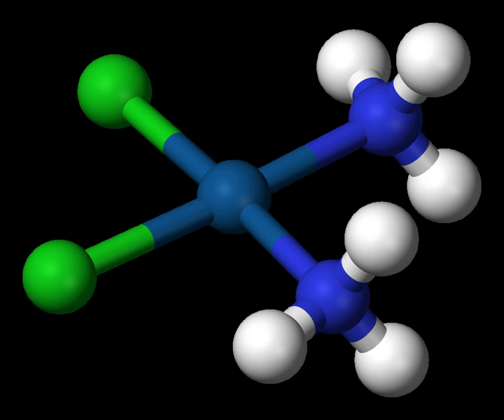In chemistry, a coordination complex consists of a central atom or ion, which is usually metallic and is called the coordination center, and a surrounding array of bound molecules or ions that are in turn known as ligands or complexing agents.